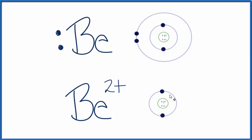Because of that, it's very stable, and that's why beryllium will lose these two valence electrons to become more stable, to have a more stable configuration.